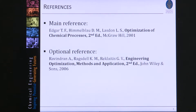This is the book — the main reference is 'Optimization of Chemical Processes.' You could also read 'Engineering Optimization and Methodical Applications' as an optional reference. You could also search the web, Google, or YouTube — just search things like optimization in chemical engineering or optimization in general.